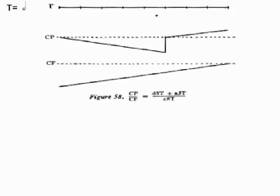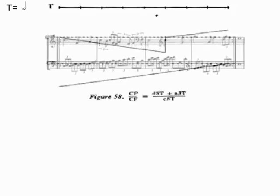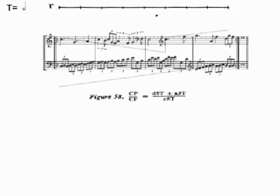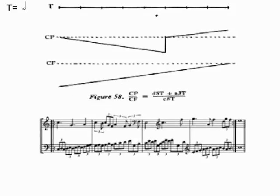If one melody, the cantus firmus, moves along an axis, then the other melody, the counterpoint, may traverse two or more axes in the same period of time.